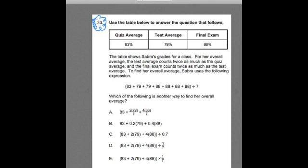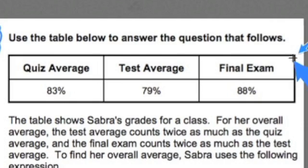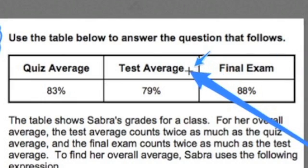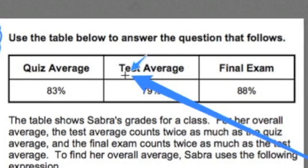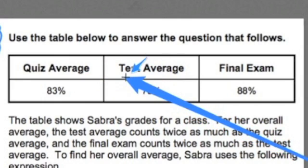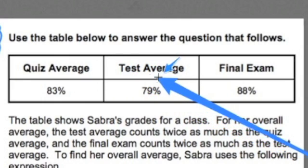When I approach a problem like this, the first thing I want to do is just scan it over. And as I do that, I'm going to notice certain things. For example, we have a table here. Sometimes tables are used for data analysis, and I see the word 'average' come up twice, so maybe this involves data analysis involving the average.